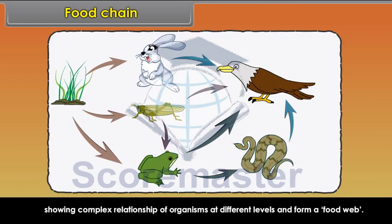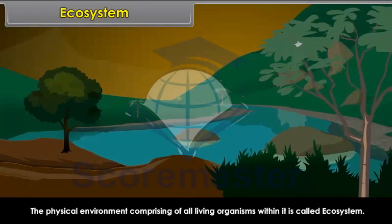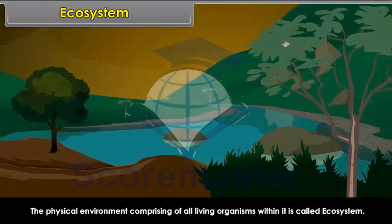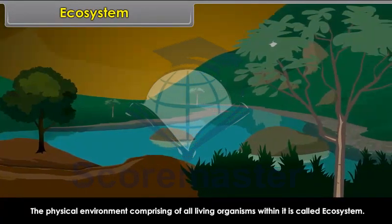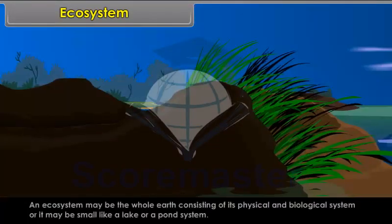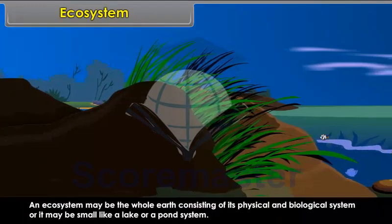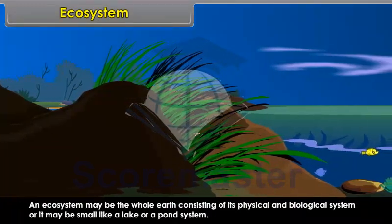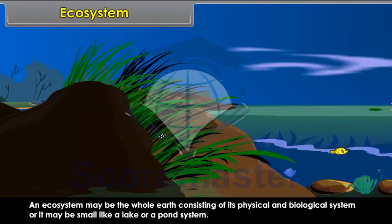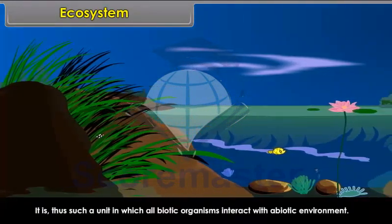Ecosystem. The physical environment comprising all living organisms within it is called ecosystem. An ecosystem may be the whole earth, consisting of its physical and biological system, or it may be small like a lake or a pond system. It is a unit in which all biotic organisms interact with the abiotic environment.